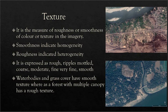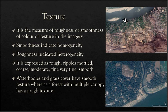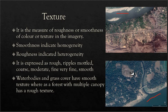Generally, it is believed that water bodies and grass cover have smooth texture, whereas forest with multiple canopy has a rough texture. Here you can see a river and its tributary — the texture is smooth. But coming to this area, it is a forest cover area with a rough texture. Whereas this area may be a playground with grass cover, and it is smooth. So basically these features have smooth textures, whereas other features have rough texture, and we can identify the features based on their textures.